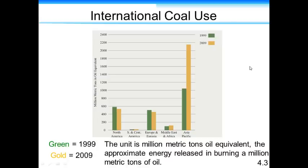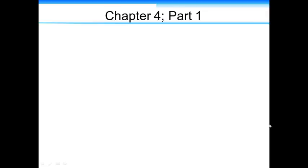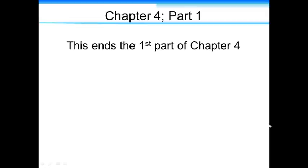So this slide here shows international coal use. And as we can see, 1999 is in green and gold is 2009. Not much change in the last 10 years in most of the world, but you can see how Asia has undergone a period of extreme development where their energy use has, or the amount of coal they're burning, has doubled. This ends the first part of chapter 4.